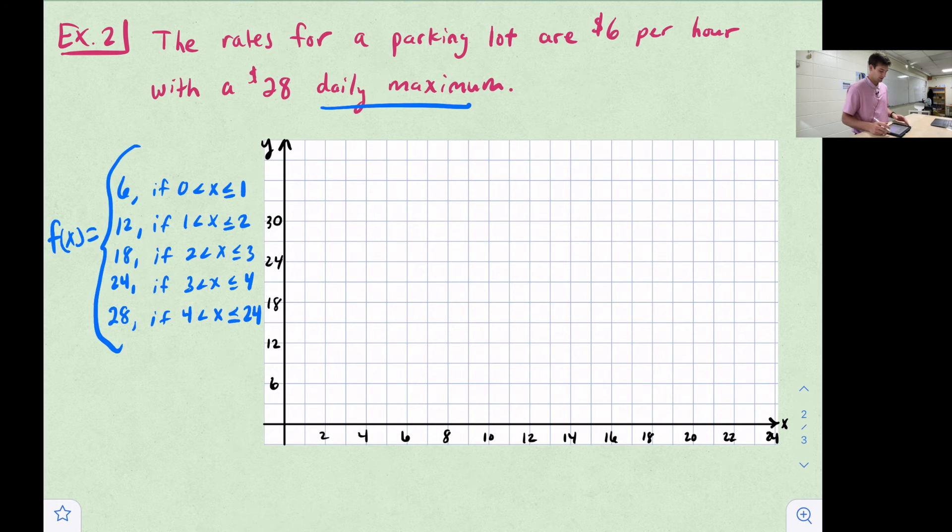Now let's show how we would graph this as a step function. The first thing we're going to do is graph y equals six, and that's between zero and one hour. We could put an open circle here on zero and a closed circle on one, and we can draw our line between those two. Then we move up to $12 if we are between one hour and two hours. Then we move up to $18 if we are between two hours and three hours. Then we move up to $24 if we are between three hours and four hours.